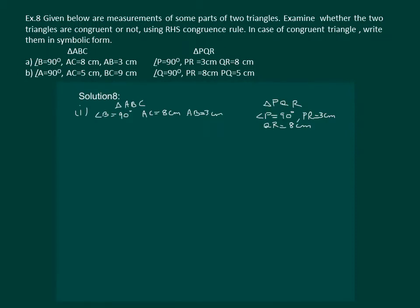Let us draw the triangles ABC and PQR and mark the given information. Here we can see angle B is equal to angle P equal to 90 degrees. Then AC equal to RQ equal to 8 cm and it is the hypotenuse.